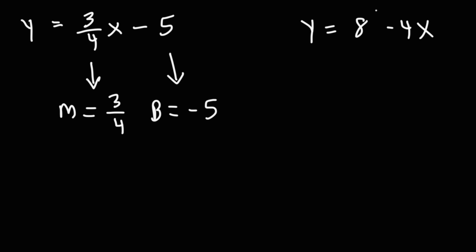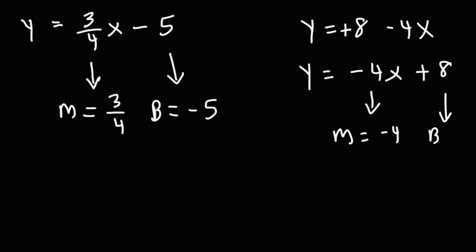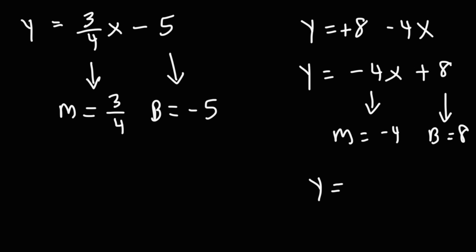For the next example, y equals 8 minus 4x — it's not written in slope-intercept form, but we can change that. If we switch the 8 with the negative 4x and write it as negative 4x plus 8, keep in mind there's a plus in front of the 8. Writing it this way, we can see that the slope is negative 4 and the y-intercept is 8. If it's not given to you in slope-intercept form, you need to adjust the equation and put it in slope-intercept form first.